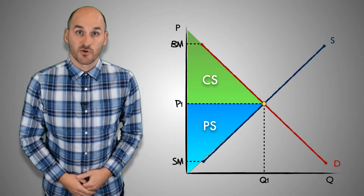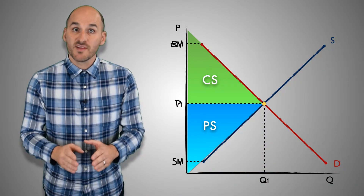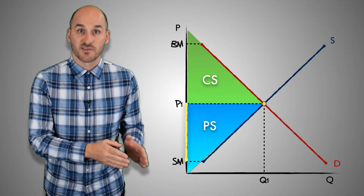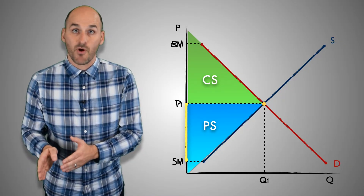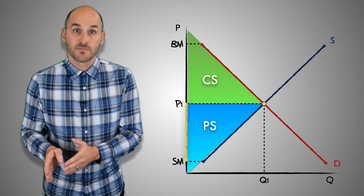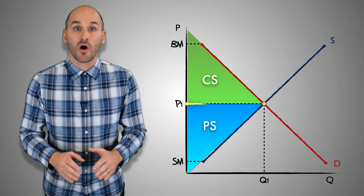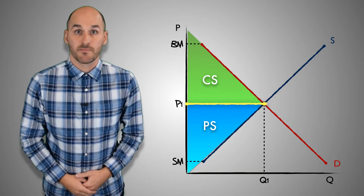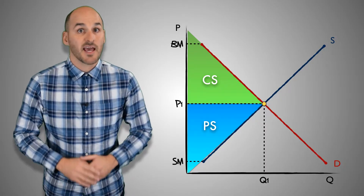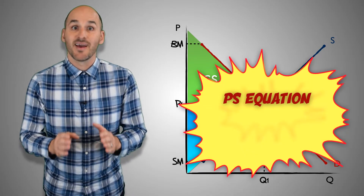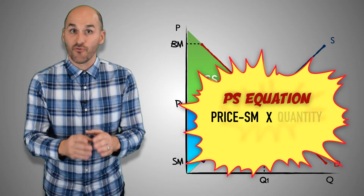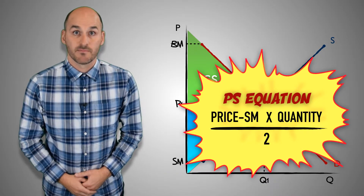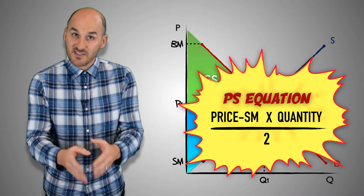In the case of producer surplus, one side can be found by taking the difference between the equilibrium price in the market and the seller's minimum price. The other side is equal to the total quantity of output sold in the market. Take these two sides, multiply them, and then divide by 2, and you'll find the total sum of producer surplus in the market. Let's give it a shot.